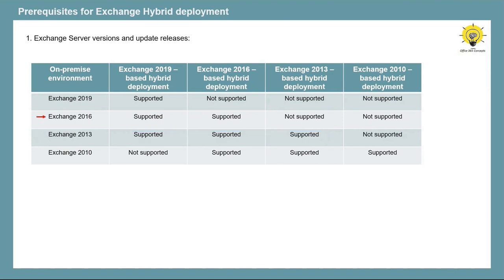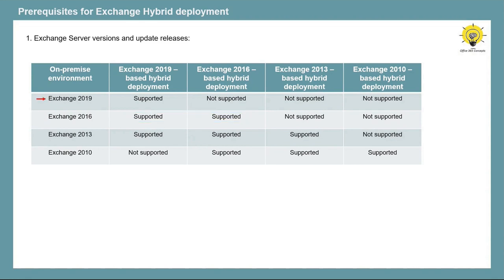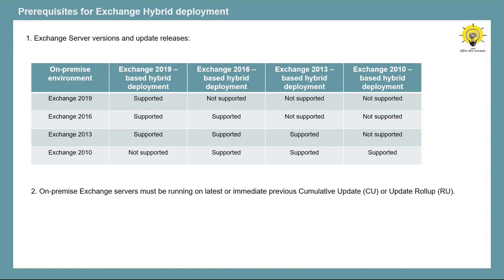If you have Exchange Server 2016 and 2019 installed in your on-premise, you can use any one of these two versions for Hybrid deployment. And if you have Exchange 2019 installed, you can use that same server, but you cannot use earlier versions. You also need to make sure the on-premise Exchange Server is running on the latest cumulative update, or at minimum the immediately previous update.